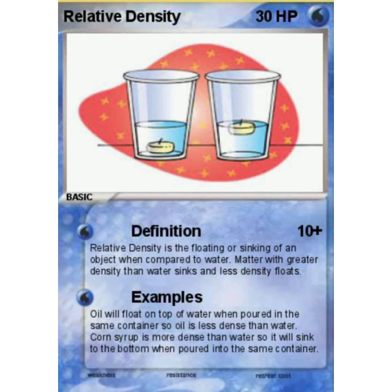Relative density describes the floating or sinking of an object when compared to water. Matter with greater density than water sinks, and matter with less density floats. For example, oil will float on top of water when poured in the same container. Corn syrup is more dense than water so it will sink to the bottom when poured into the same container.